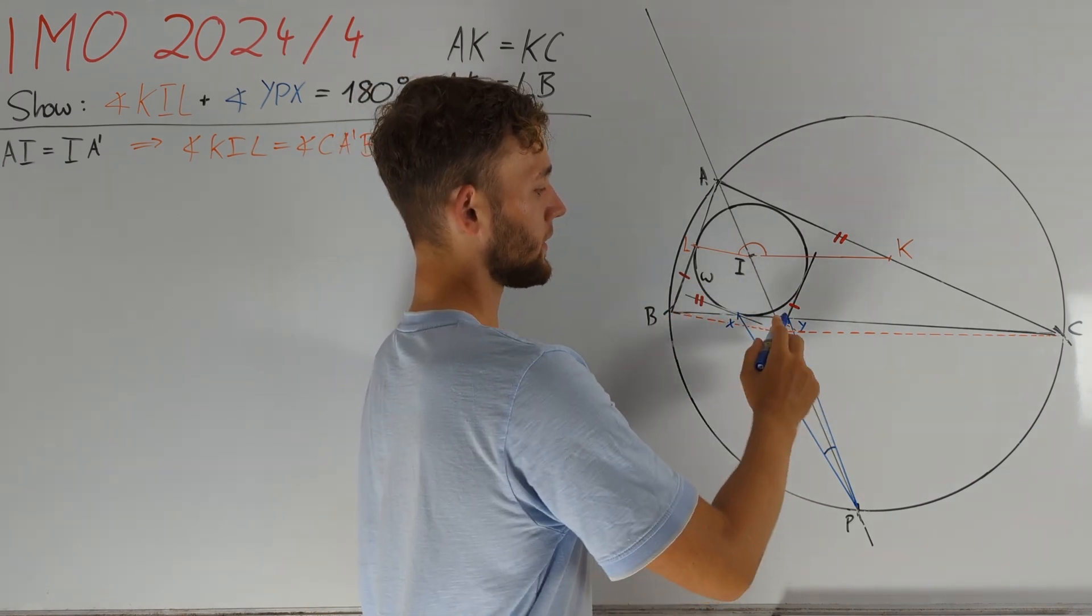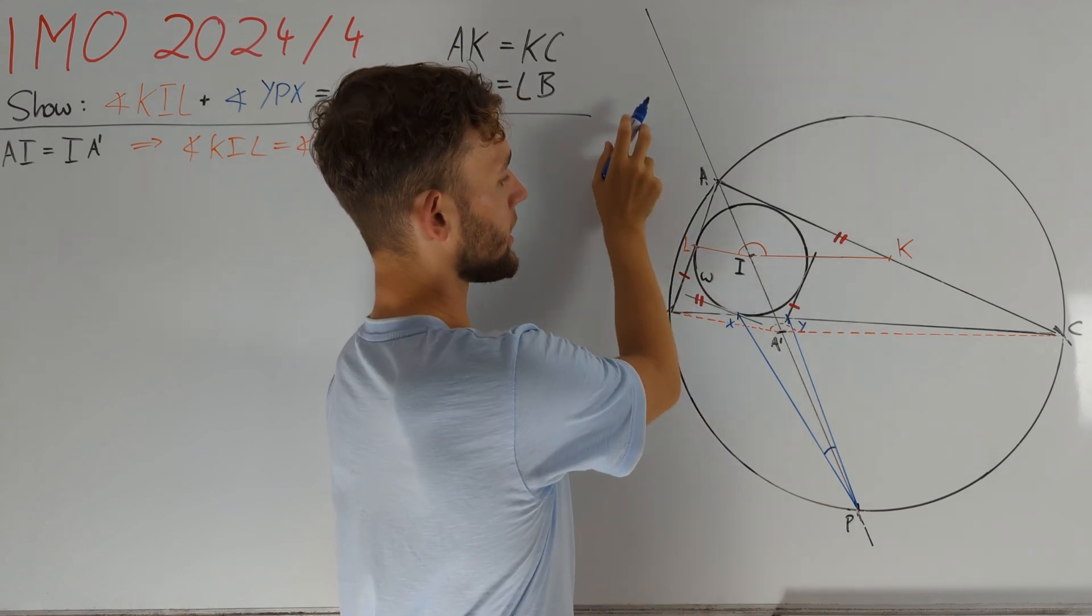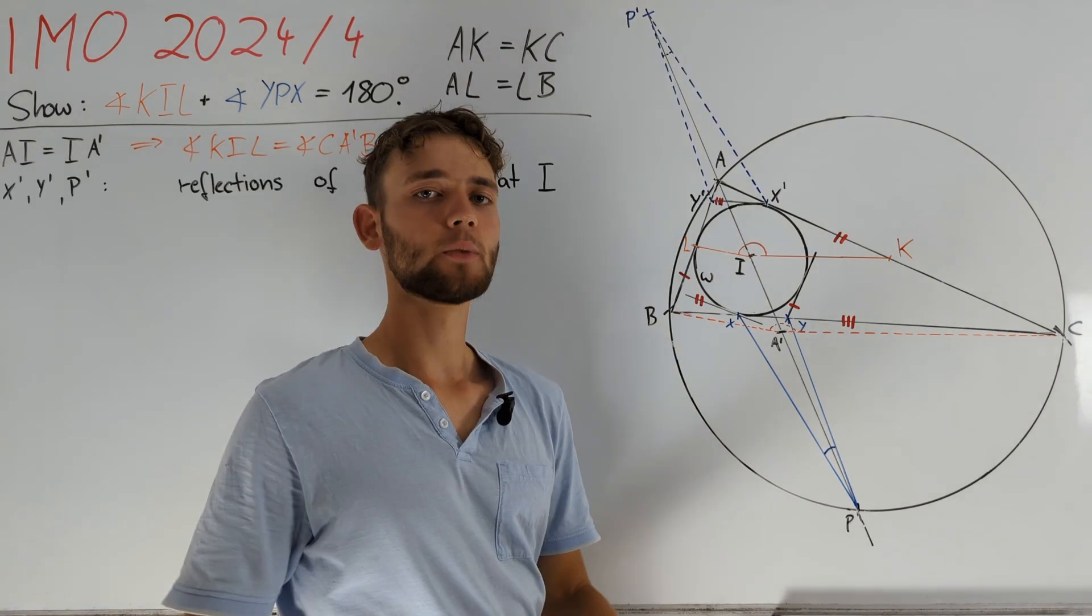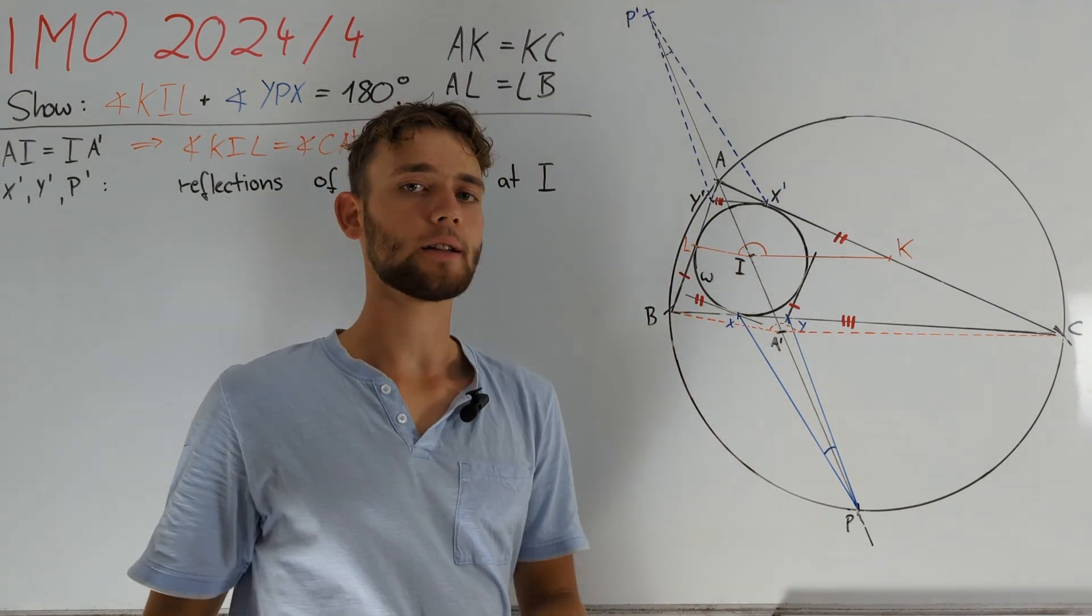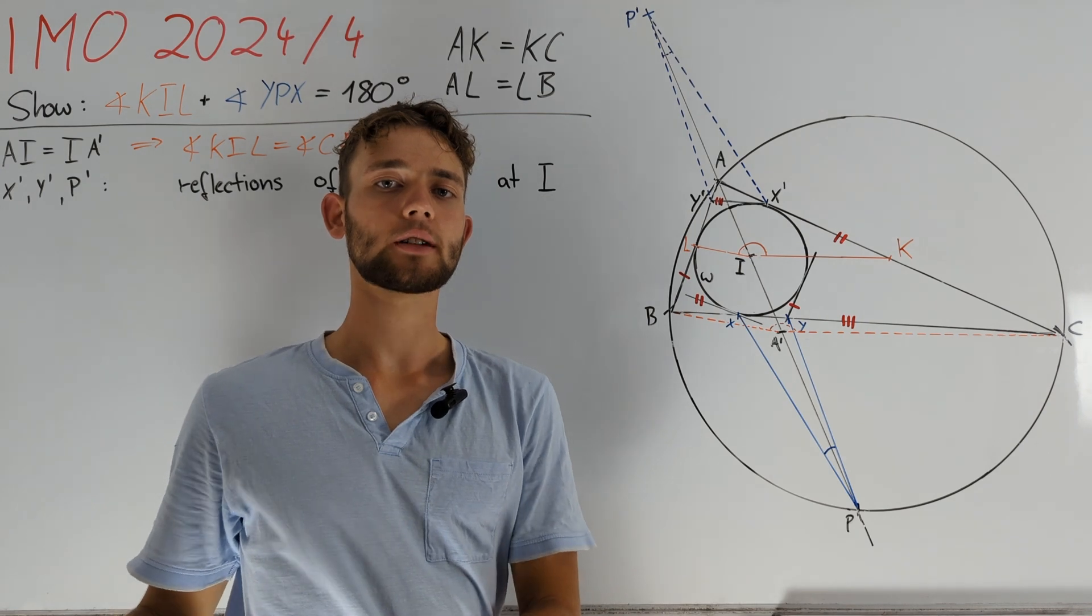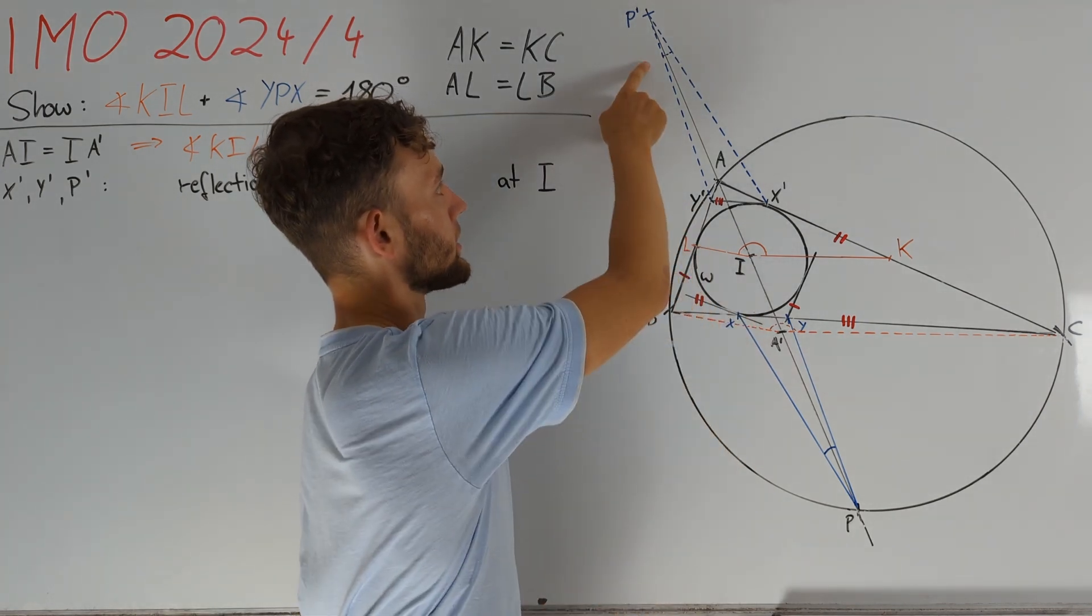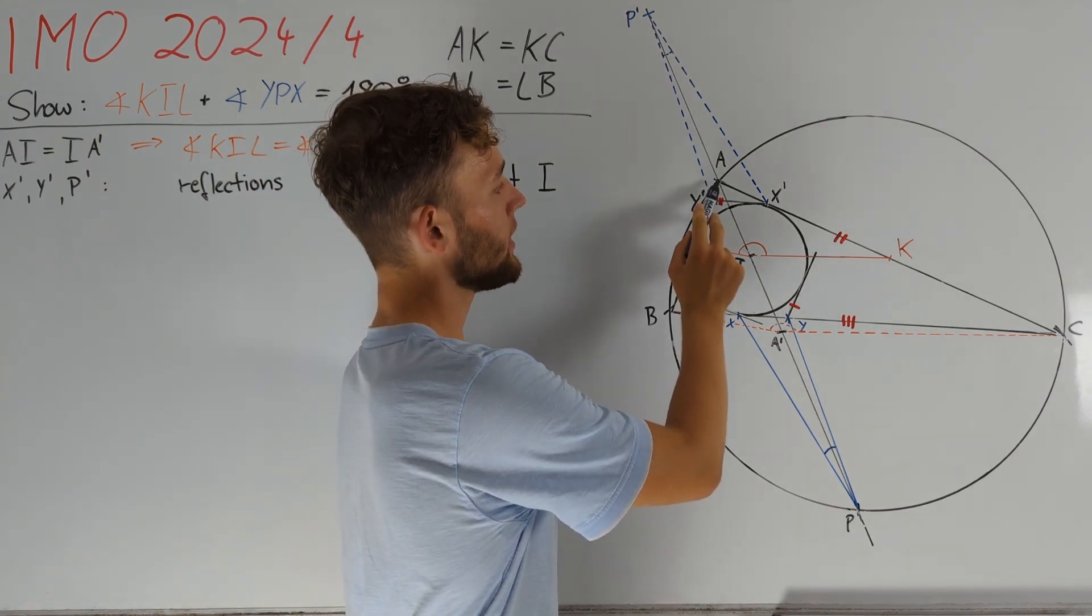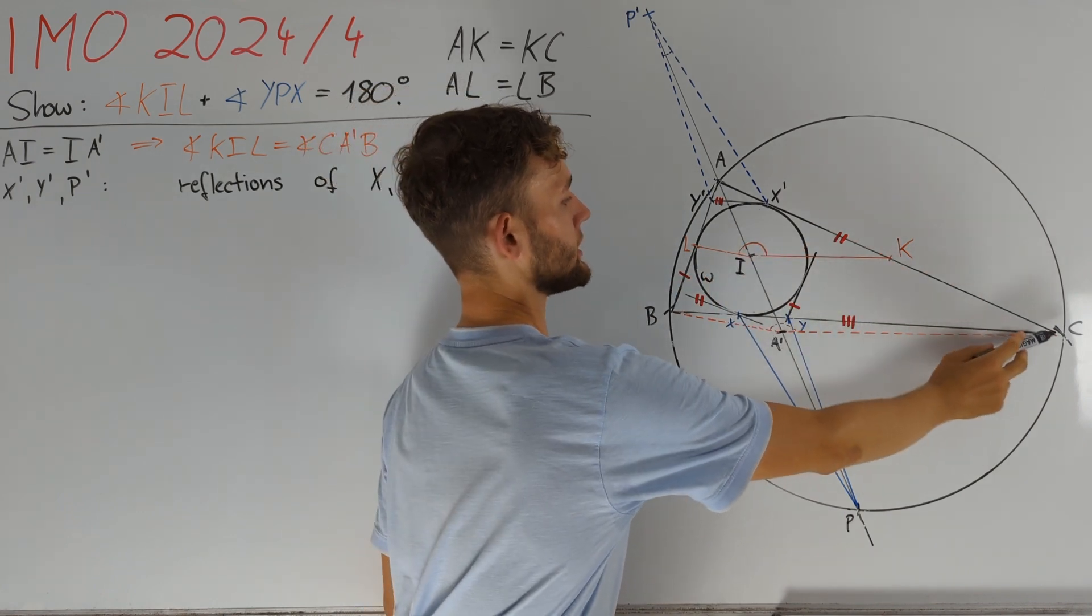This motivates us to reflect angle YPX at I to get a new and equal angle Y'P'X'. Since we want to prove that the sum of the orange and the blue angle equals 180 degrees, we would like to construct a cyclic quadrilateral such that the orange and blue angles are opposite. We can indeed achieve this here by considering the homothety at A that sends Y' to B and X' to C.